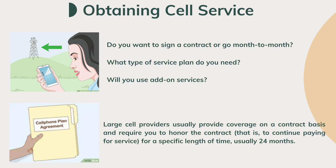When you want to purchase cell service, you are faced with a dizzying number of options. Do you want to sign a contract or go month to month? What type of service plan do you need? Will you use add-on services? Large cell providers usually provide coverage on a contract basis and require you to honor the contract — that is, to continue paying for your service for a specific length of time, usually 24 months. Contracts are per line of service, so if you want service for two phones, you must sign two contracts. When you open a new line of service, you often have to pay an activation fee.